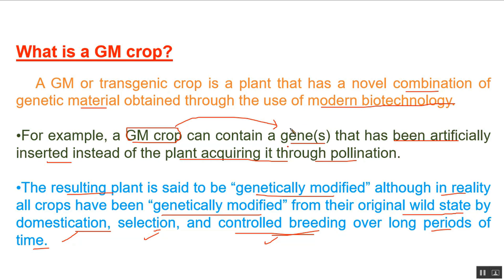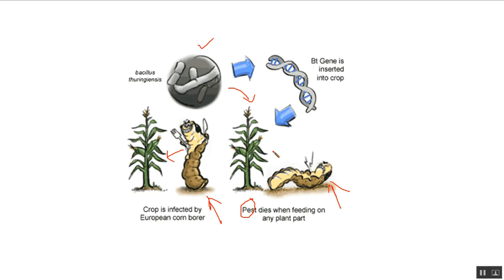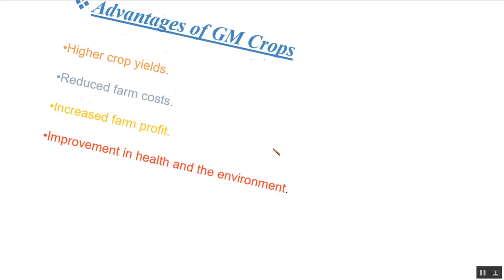As we can see in this image, a gene is inserted into this plant, giving it resistance. It produces a toxin which kills the pest. In the image, you can see a pest eating the crop, and once the gene is inserted into the plant, the pest will automatically die because the plant will produce the toxin.